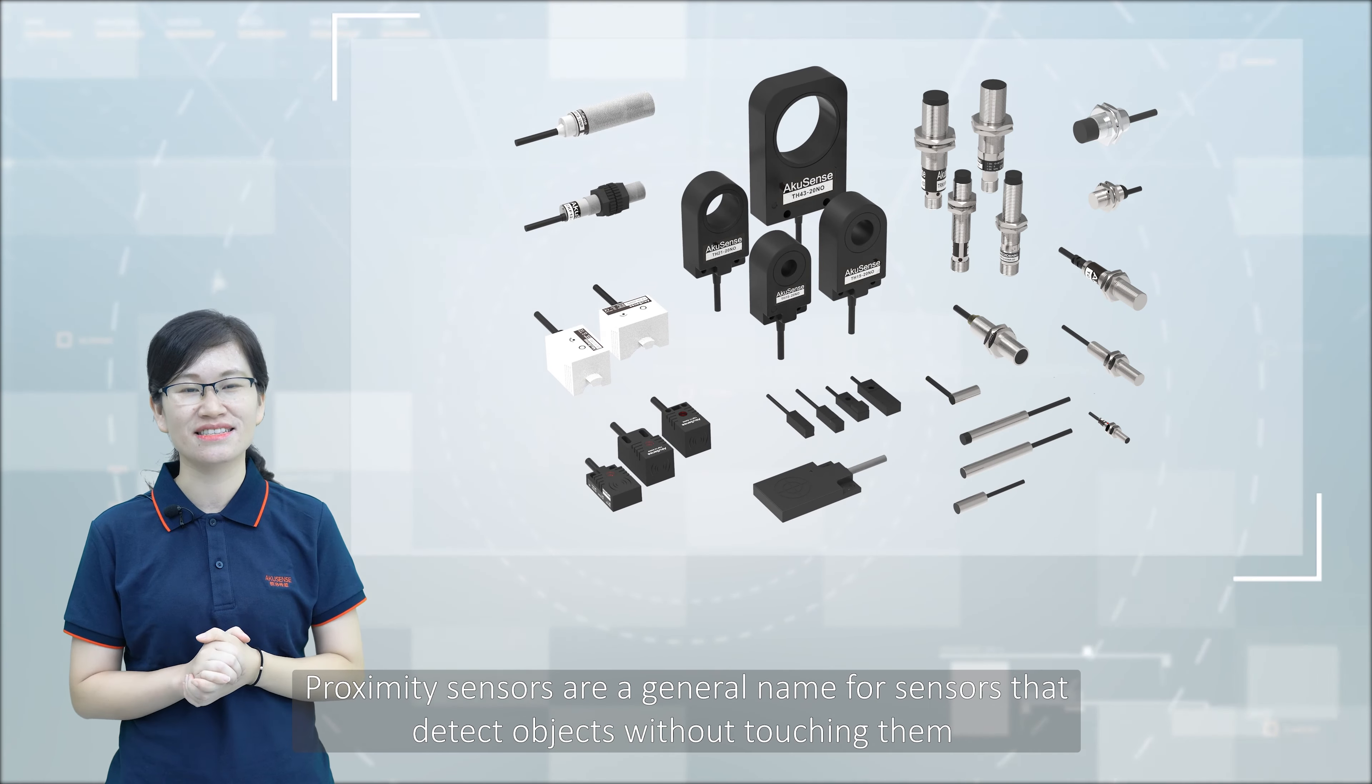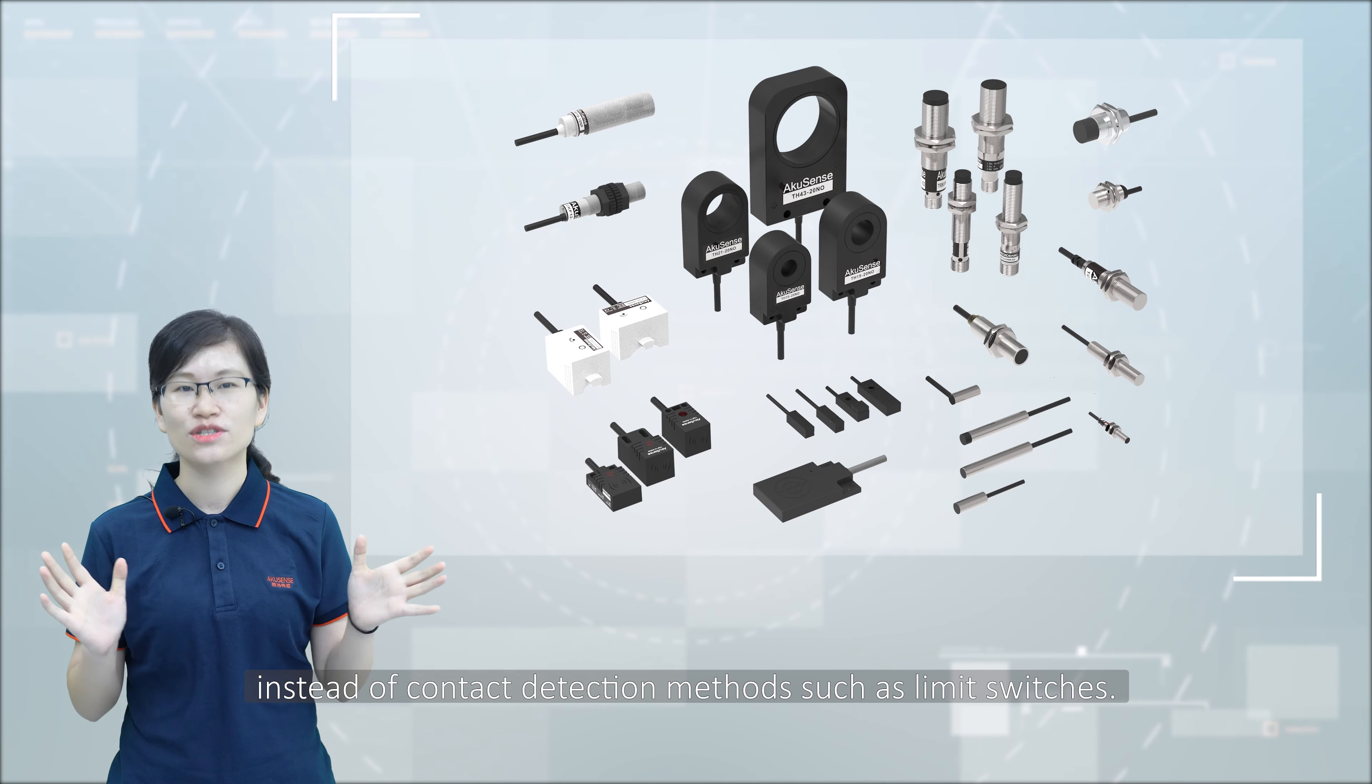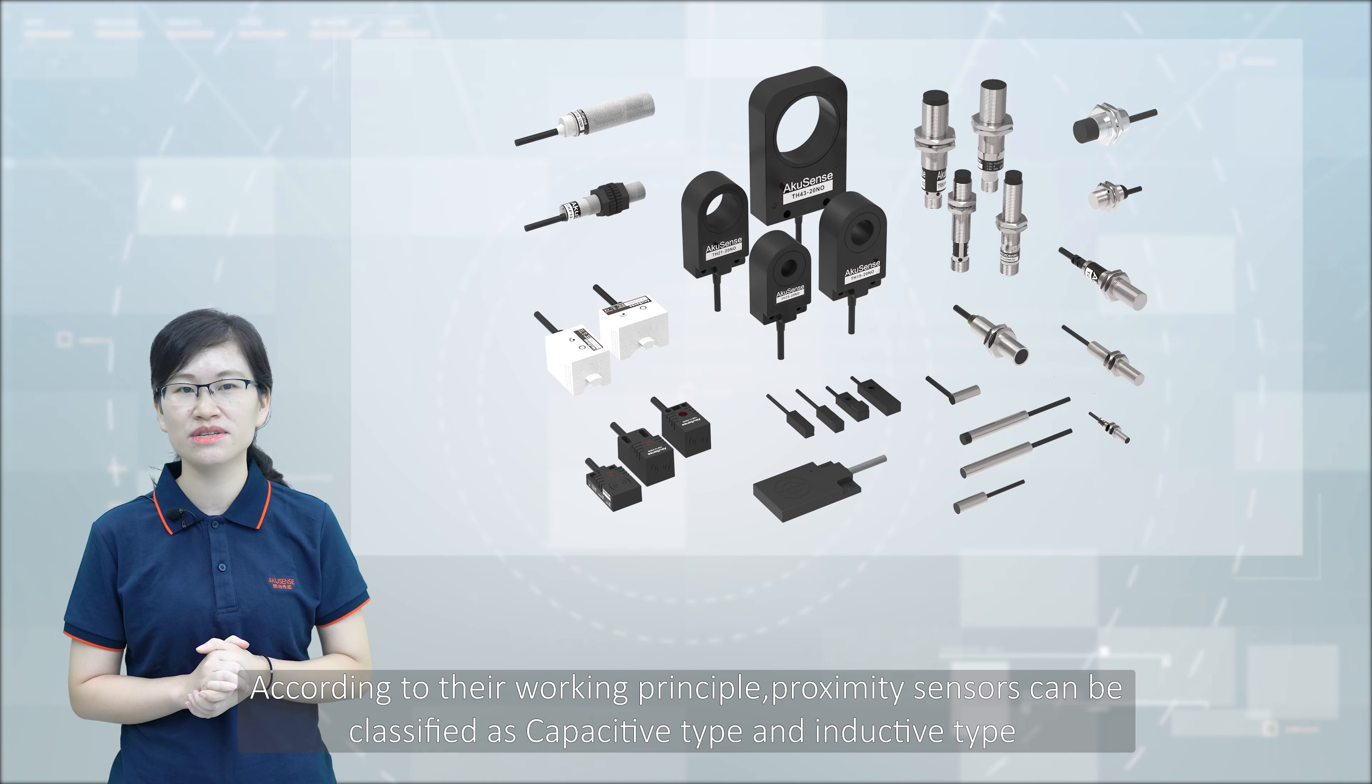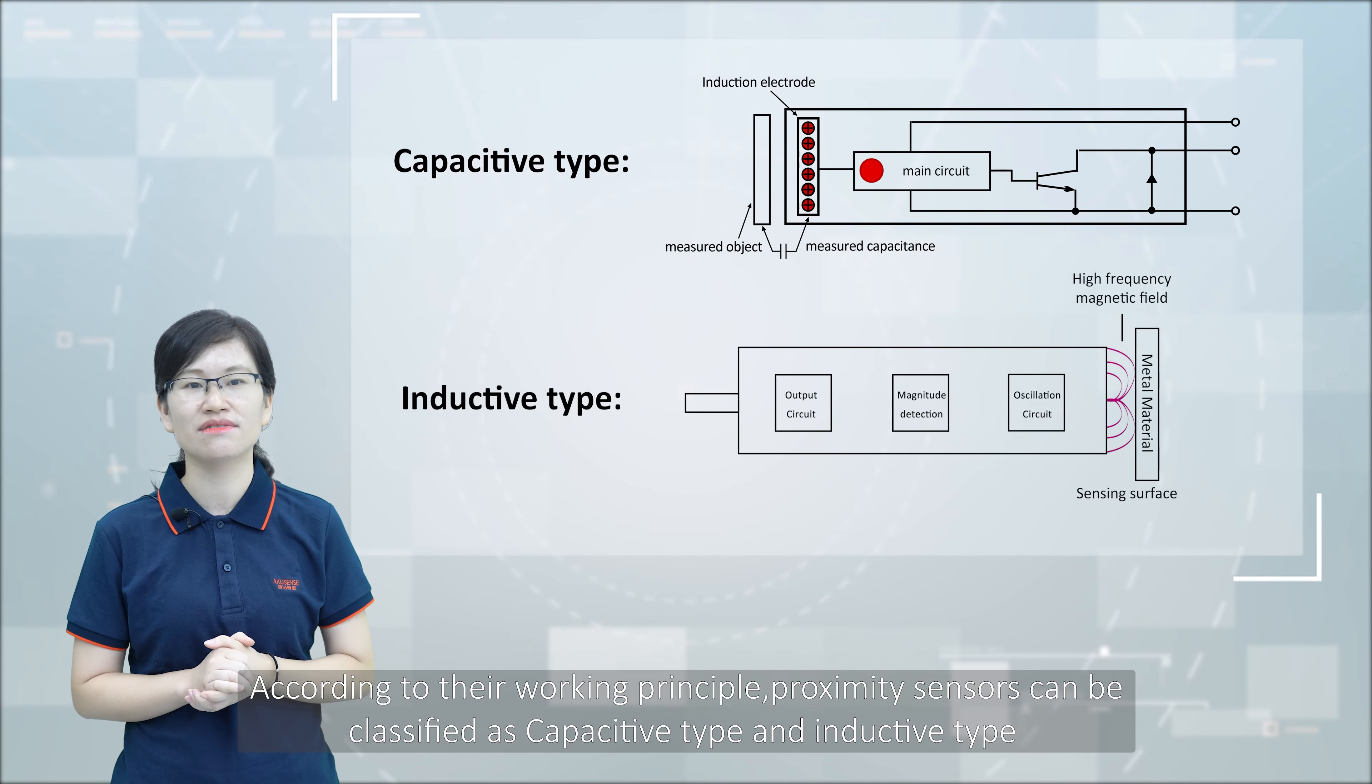Proximity sensors are a general name for sensors that detect objects without touching them, instead of contact detection methods such as limit switches. According to the working principle, proximity sensors can be classified as capacitive type and inductive type.